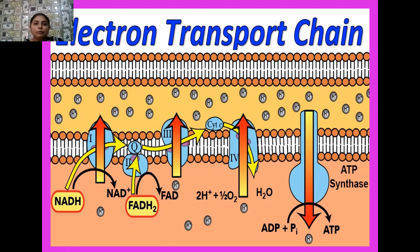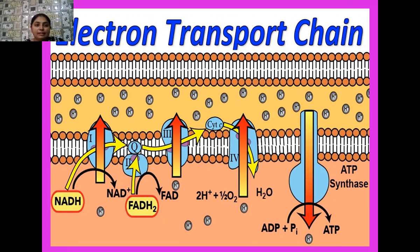In today's topic I am going to tell you how the transfer of electrons, which are released from these energy-rich molecules after their oxidation, how these electrons transfer to various electron acceptors, and finally come in contact with ATP synthase enzyme, and in this way ATPs are generally produced. The entire process happens in the inner mitochondrial membrane called cristae and this process is called electron transport chain.